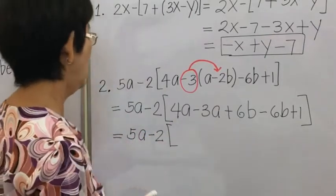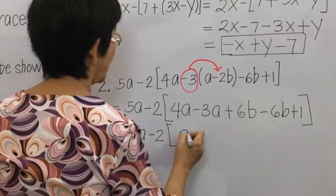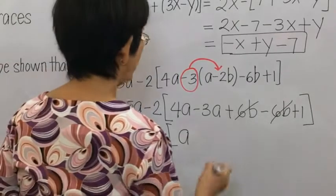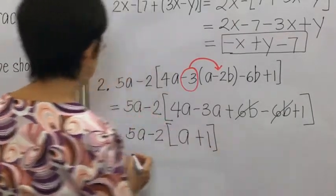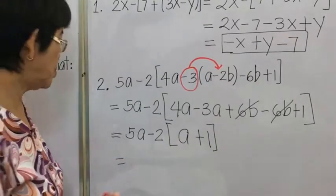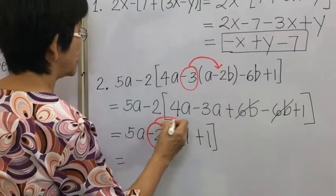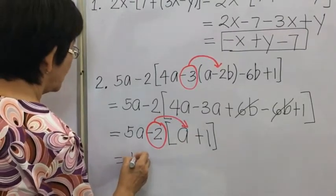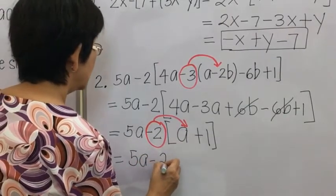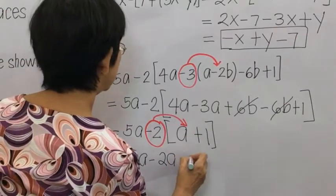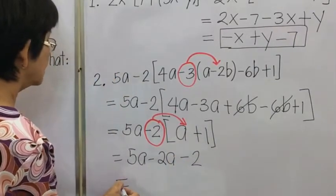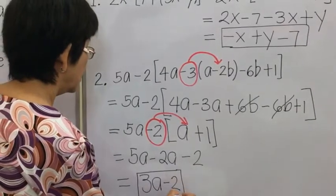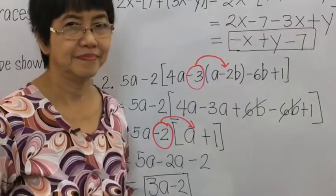Inside the brackets: 4A minus 3A gives A, and 6B minus 6B is 0, so we have A plus 1. Then we distribute negative 2 inside, applying the distributive property: 5A minus 2A minus 2, which equals 3A minus 2. That is our final answer for example 2.